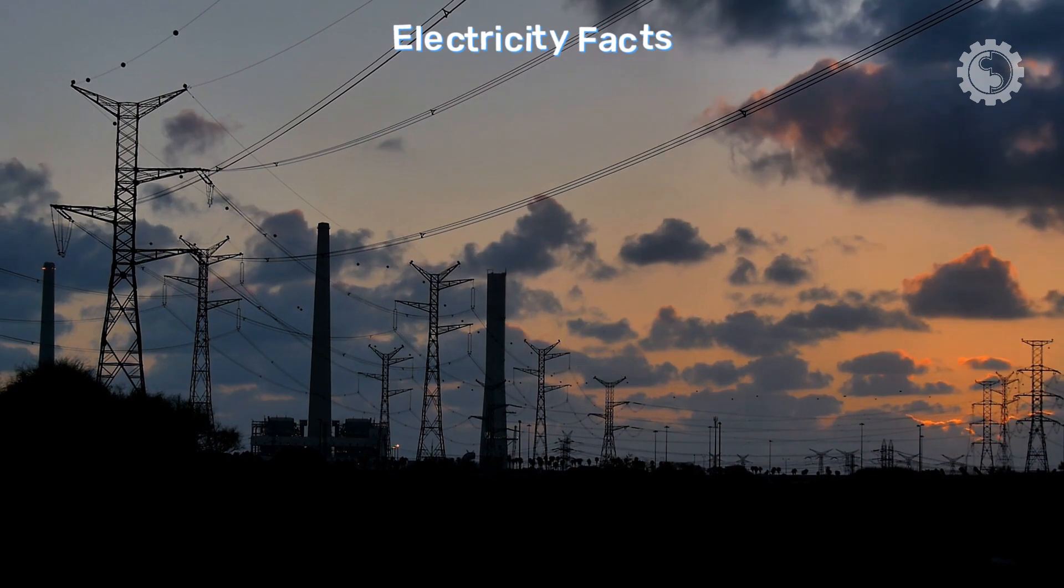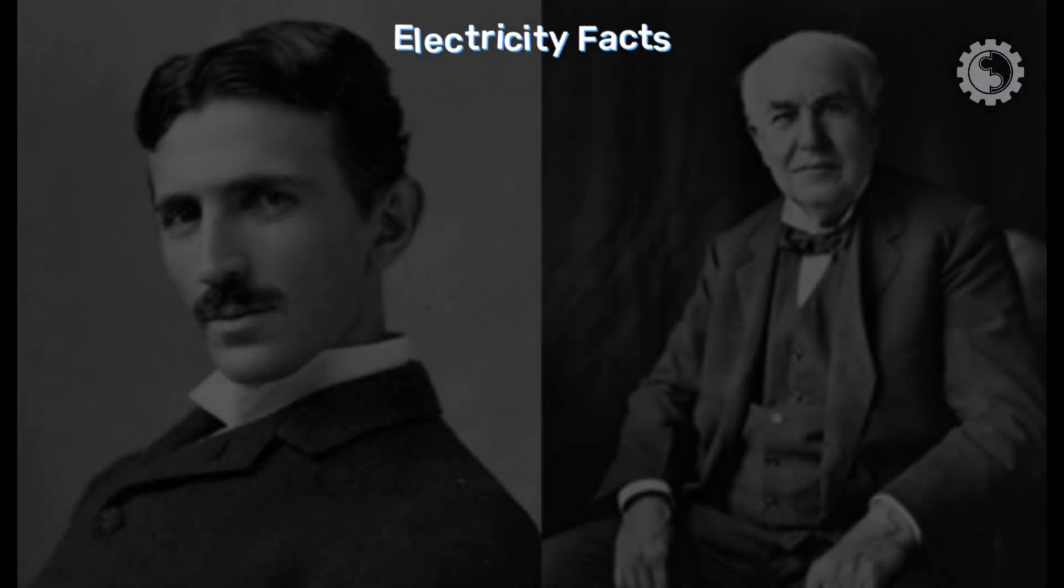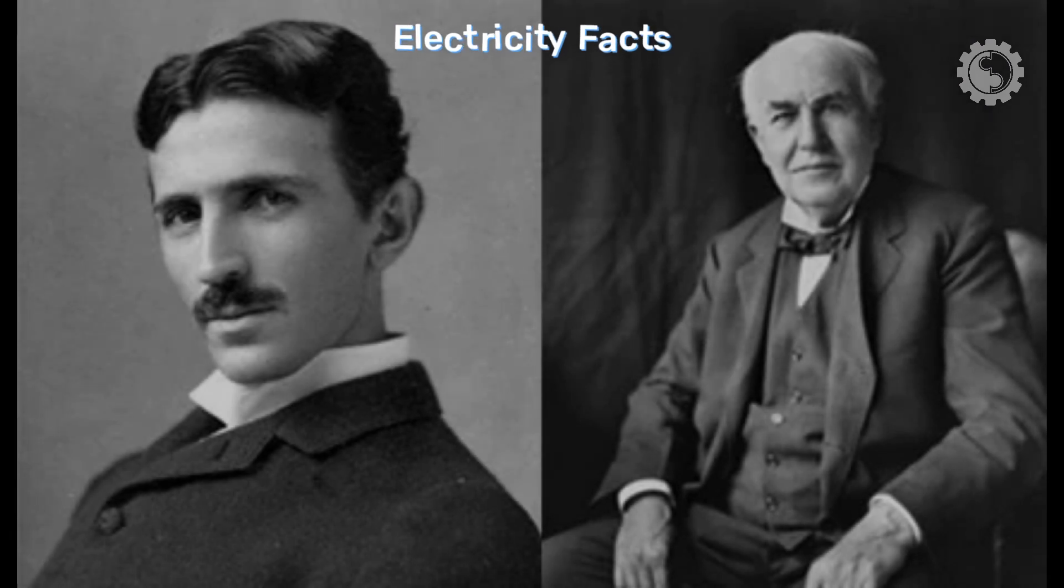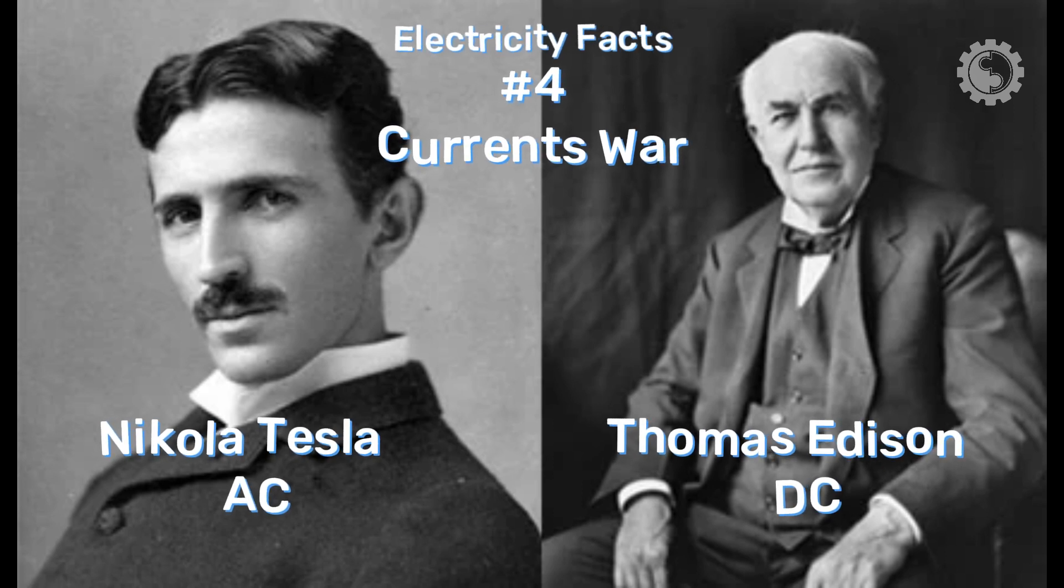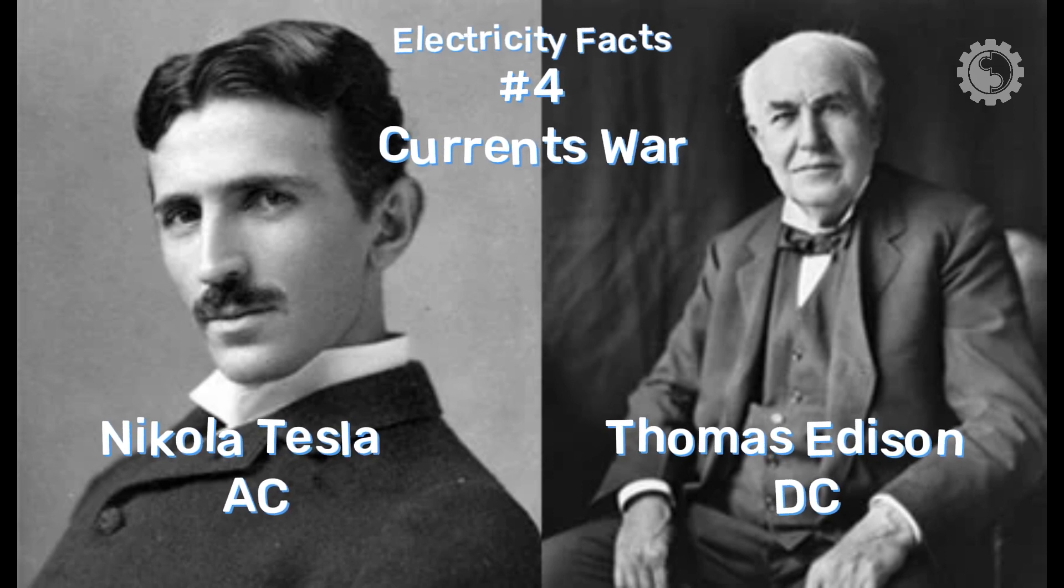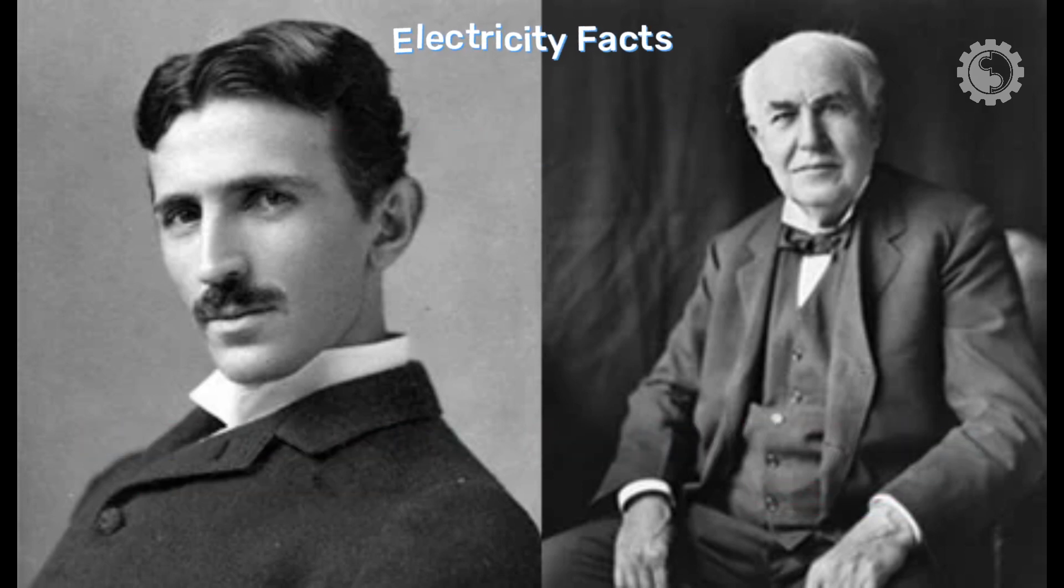The 1880s witnessed a captivating war of currents, fueled by the rivalry between two brilliant minds, Nikola Tesla and Thomas Edison. Tesla contributed to the advent of AC current, while Edison spearheaded the development of DC current. Both inventors sought to popularize their respective currents.